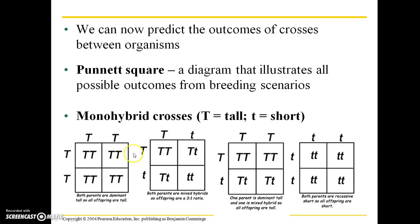The same holds true for the egg cells. Half of those egg cells are going to contain the big T, or dominant allele, and half are going to contain the little t, or recessive allele. So when those sperm and egg cells combine, you get the recombination here.